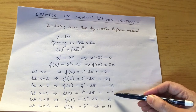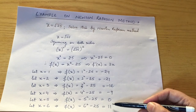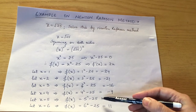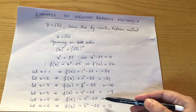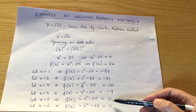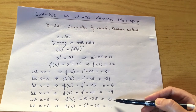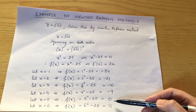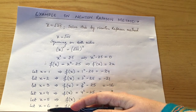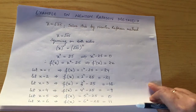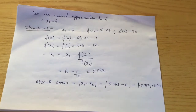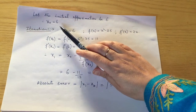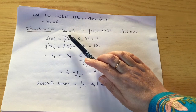We get a negative term up to x=5 and a positive term at x=6, so our root lies somewhere there. The actual root is 5, but we are solving this by the Newton-Raphson method, so let's take the initial approximation as x₀ = 6.